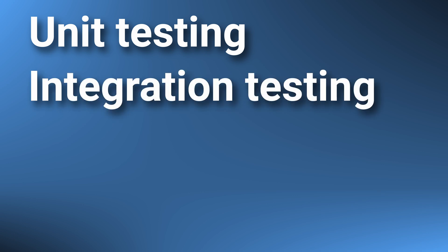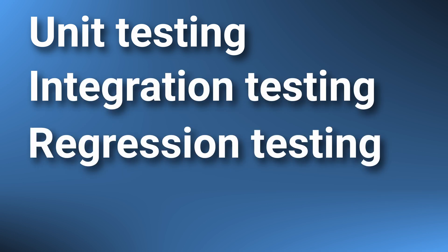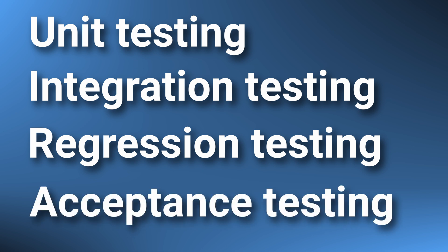But before we talk about a concrete framework, let's talk about what it even means to test the code. Essentially it means that we want to check that the code we wrote does exactly what we wrote it to do. This testing can happen on many levels. Largely speaking we usually have these layers: the unit testing layer, which tests if each module works on its own; the integration testing layer, which tests how the modules work together; the regression testing layer, which tests that we did not break critical systems with new changes; and the acceptance or system testing layer, which tests that the whole system works as expected. The first entries on this list are done fully automatically, and we add more and more manual labor as we go down the list.